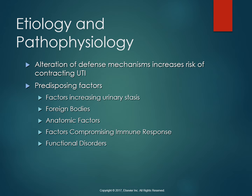Table 45.2 in the book talks about the list of factors that predispose a person for UTI. These predisposing factors include any factors that increase urinary stasis, such as urinary retention, which can cause bacteria to grow and live. Another risk factor is foreign bodies — we'll talk about calculi or stone formation — and indwelling catheters are a huge one. Anatomic factors include defects like fistula or congenital defects that cause obstruction, which can increase stasis.